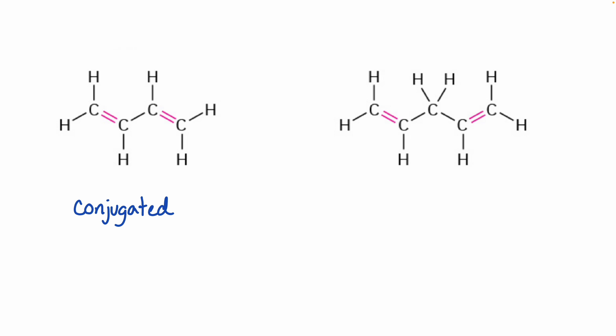I know it's a conjugated diene because I have sp2 hybridized carbons all in a row, with this perfect spacing where my bonds go double bond, single bond, double bond. The one on the right would be isolated — I can tell because there's an sp3 hybridized carbon in the middle, breaking the ability for one double bond to communicate with the other.